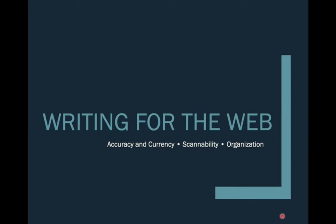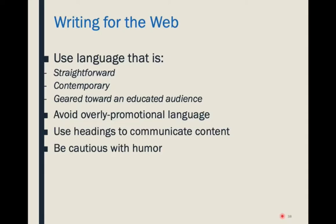Writing for the web: the web has different affordances than a novel or a magazine. It affords quick, succinct information-getting — scanning, finding, reading, and moving to the next page. When we're writing for the web, it's a completely different style. It needs to be straightforward, contemporary, and geared towards an educated audience. When people are on the web, they'll intuitively detect different types of language — for instance, overly promotional language. Your average web audience intuitively recognizes when you're trying to sell something. You also need to be very careful that content appears up to date and current — that's really critical.